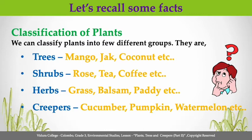Rose, tea, and coffee are some examples for shrubs. Grass, balsam, and paddy are some examples for herbs. And cucumber, pumpkin, and watermelon are some examples for creepers.